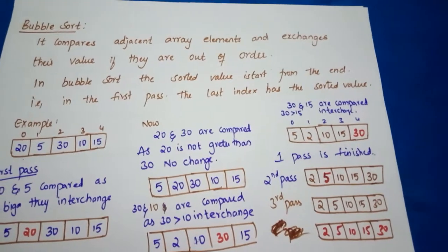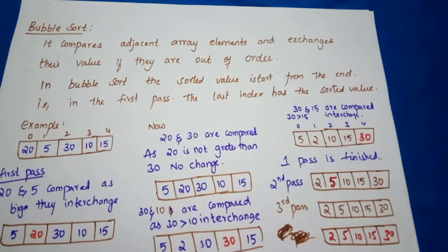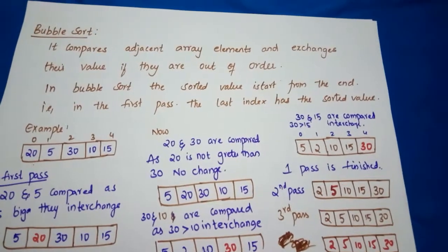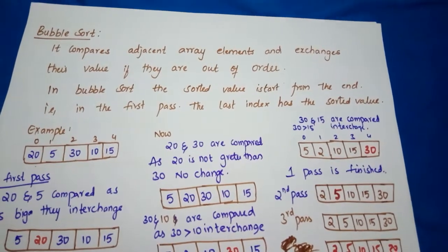In bubble sort, we compare adjacent array elements and exchange them if they are out of order.